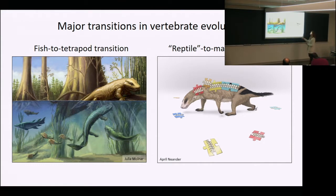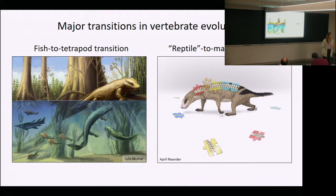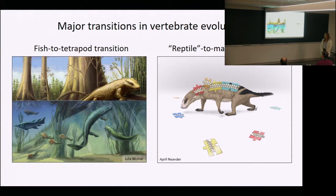I'm going to introduce you to two major types of transitions we work on in my lab. The first is the fish-to-tetrapod transition, which happened around 400 to 330 million years ago. This is a really important event in Earth's evolutionary history because it resulted in essentially all land-going vertebrate animals — which we are one of. The other transition is the reptile-to-mammal transition, which resulted in one of the most charismatic and ecologically diverse groups of animals: the mammals. This happened around 320 to 200 million years ago.